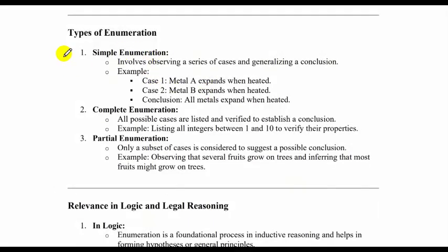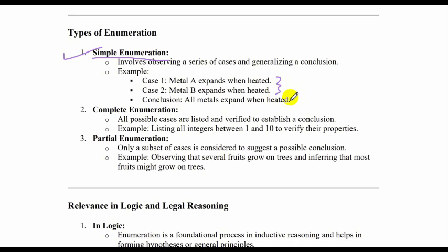In this topic, we are going to learn about simple enumeration, not about complete and partial enumeration. Simple enumeration involves observing a series of cases and generalizing a conclusion — the conclusion is drawn from a set of observations. For example, Case 1: metal A expands when heated. Case 2: metal B also expands when heated. Therefore, the conclusion is: all metals expand when heated. This may or may not be true because it is probabilistic — there may be certain metals which do not expand when heated.